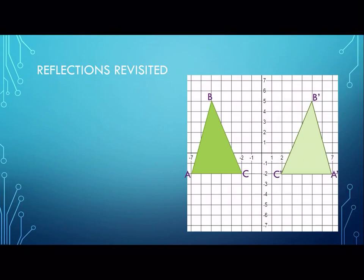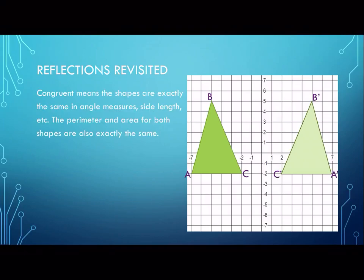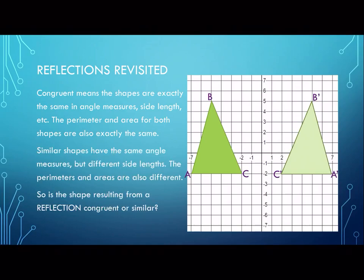Yesterday, we talked about reflections — with 'FL' meaning to flip — and we're basically flipping a shape across the x-axis or the y-axis. In both translations and reflections, the shape is the exact same: it has the exact same area, all of the side lengths are the same, and all the measures are the same. So these shapes are congruent.